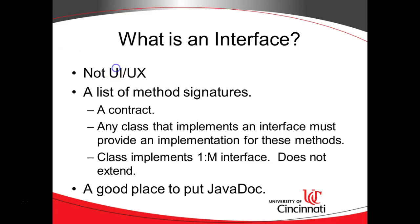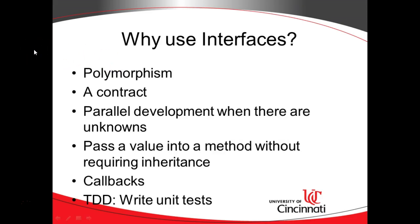So why use interfaces? Number one: polymorphism, which we'll talk about in detail in the next few slides. Polymorphism is one of the four main pillars of object-oriented programming — abstraction, polymorphism, inheritance, and encapsulation. Those are what we consider the four primary tenets of object-oriented programming. We also know an interface is a contract.